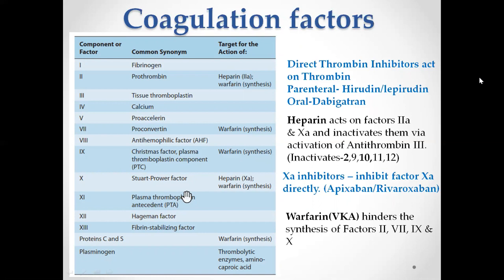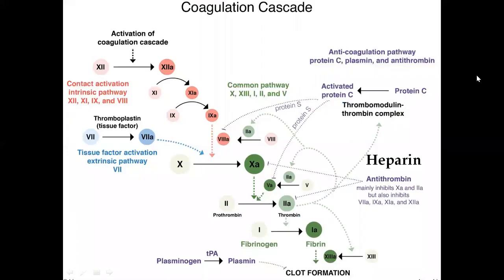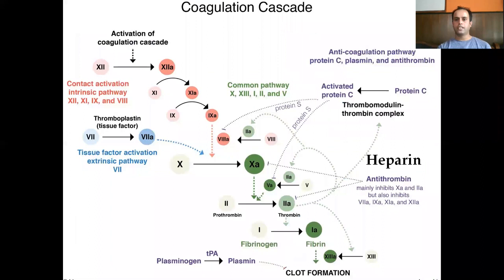Heparin inactivates already-present clotting factors, whereas warfarin hinders synthesis of new ones — so heparin's action is far quicker. When quick action is required, heparin is almost the first choice. There are also new classes: direct thrombin inhibitors, which act directly on thrombin — parenteral forms include hirudin and lepirudin, and the oral form is dabigatran, discovered around 2010. Another class, factor Xa inhibitors, directly inhibit factor Xa — examples include apixaban and rivaroxaban.